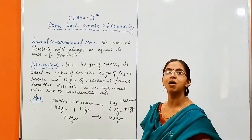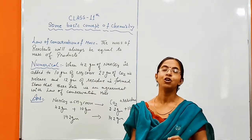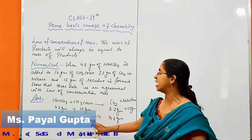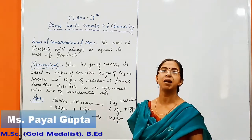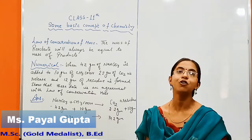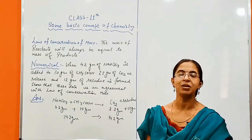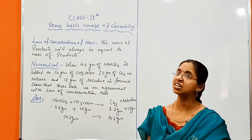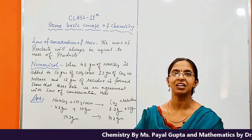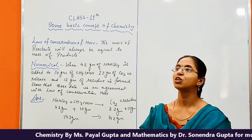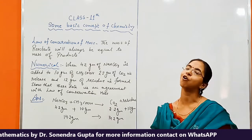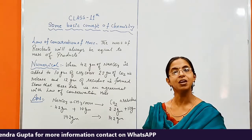The law of conservation of mass is a universal law — you can never disobey this law, so data will always be in agreement with it. If any data does not follow this law, it means either the reaction is wrong or we have the wrong experimental data. The first law states that the mass of the reactant is always equal to the mass of the product.